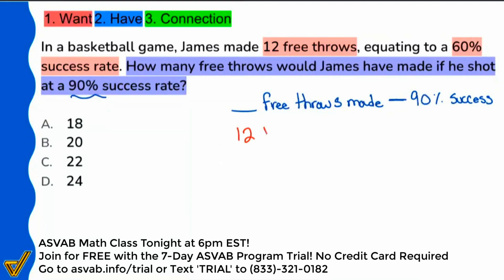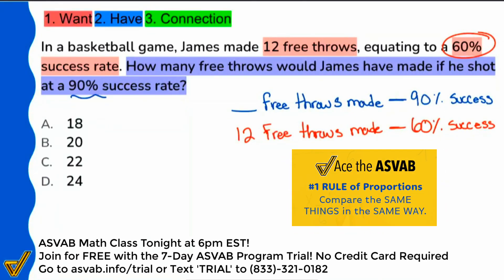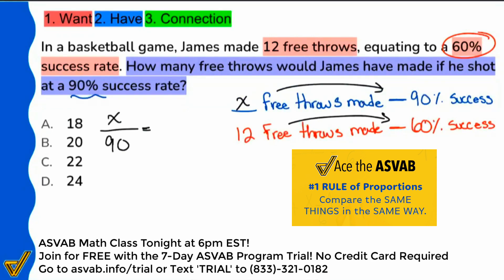So we have 12 free throws, and that corresponds with a 60% success rate. Now that we know this, we can set up our proportion — and you'll see how much easier it is to solve this way than with the traditional percent formula. So let's set this up: X free throws corresponds to 90%, and 12 free throws corresponds with 60%.